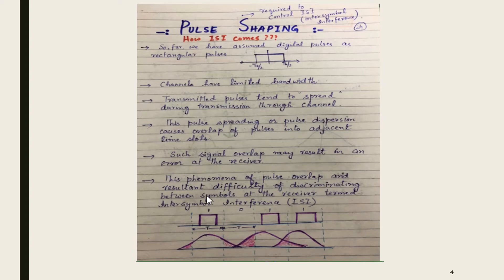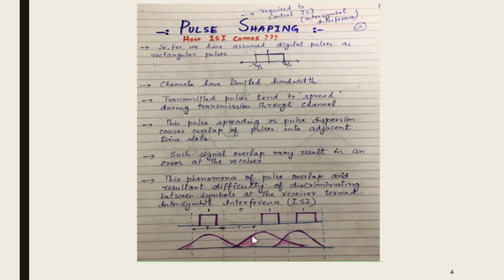This phenomenon of pulse overlap and the resultant difficulty of discriminating between symbols at the receiver is termed inter-symbol interference (ISI). For example, with pulses 1, 0, 1, 1 — where 1 is pulse on and 0 is off — when this digital pulse is transmitted through a band-limited channel, it spreads out. Sometimes this spreading is so much that two adjacent pulses start to overlap.